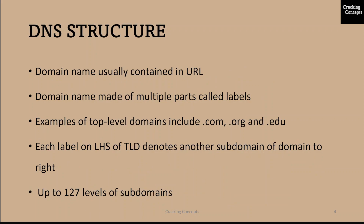Now let us look into the DNS structure. The domain name is usually contained in a URL and is made up of multiple parts called labels. The domain hierarchy is read from right to left with each section denoting a subdivision. The TLD appears after the period in the domain name. Examples of top level domains or TLD include .com, .org and .edu, but there are many others. Some may denote a country code or geographic location.